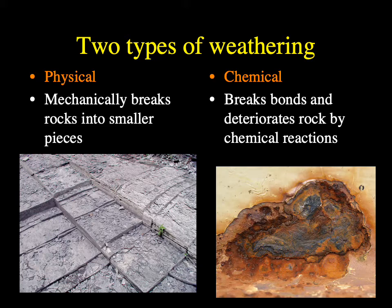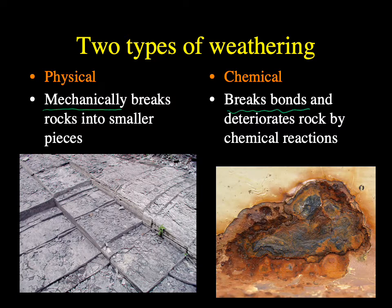There are two main types of weathering. First, there's physical weathering, which you might also call mechanical weathering — either is fine. Mechanical weathering breaks rocks into smaller and smaller pieces by some sort of physical or mechanical means. An example is dropping a plate: gravity pulls it down and it shatters. You can also chemically break rock, and the difference is that chemical weathering breaks bonds at the atomic level.